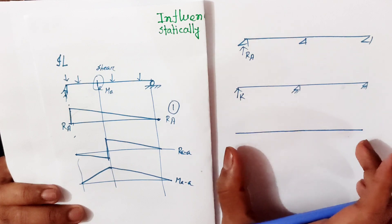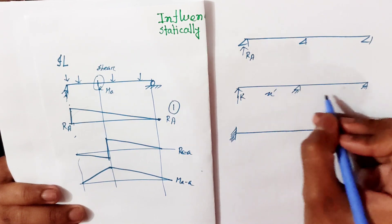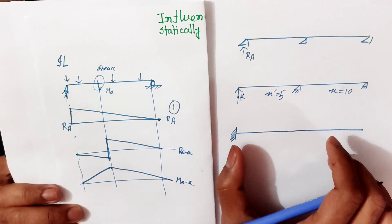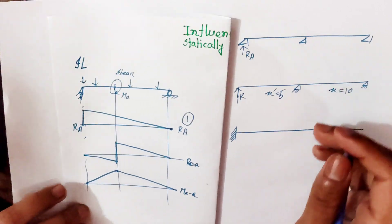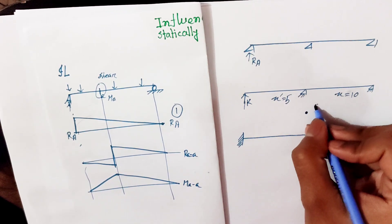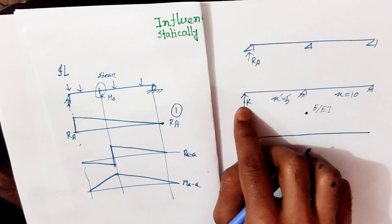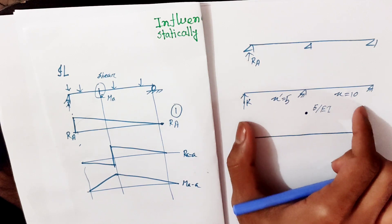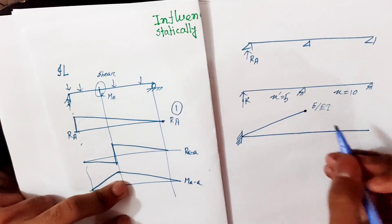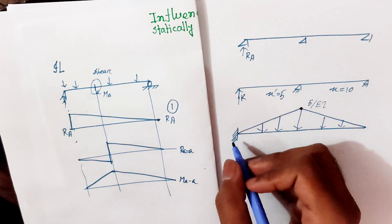We have a conjugate loaded diagram. Converting the 1-kip load: 1 kip, 1 kip, 1 kip — applied at various points. So, this is the first step to establish this reference point.